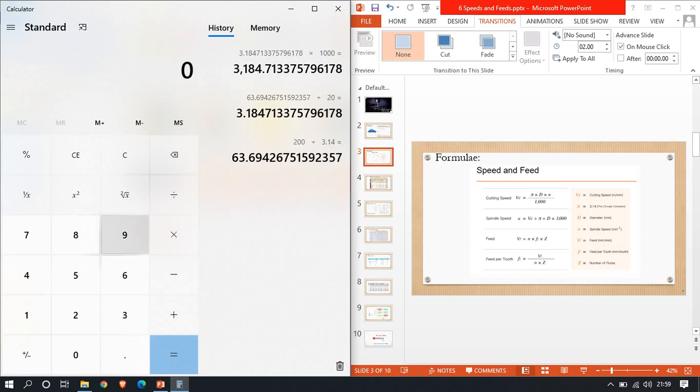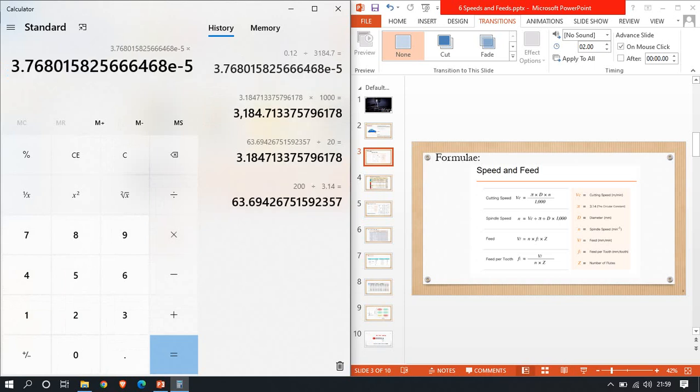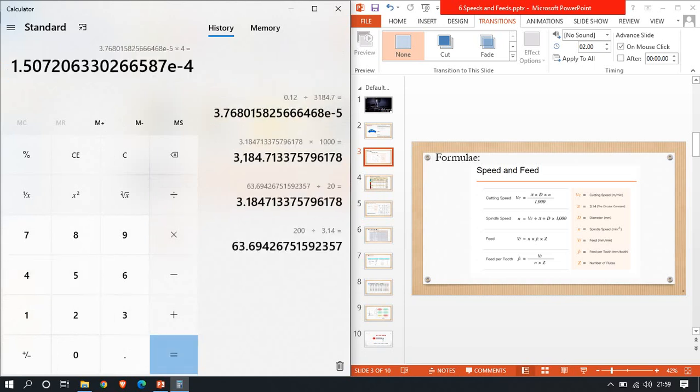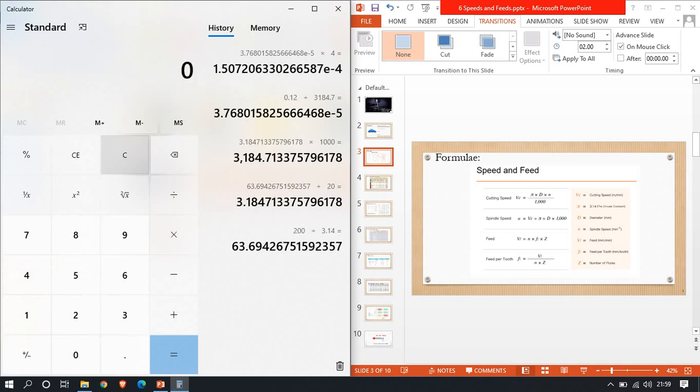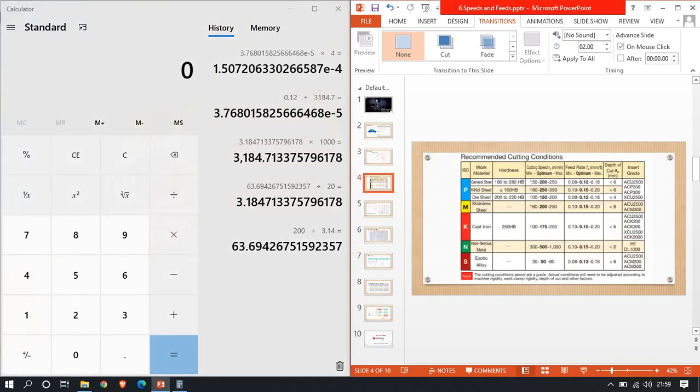For Vf, the feed rate is 0.12. So 0.12 divided by N, which is 3186, into Z, the number of flutes, which is 4.